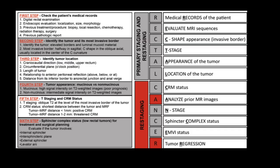Rectal carcinoma staging is a multidisciplinary approach. The checklist is: first, check the patient medical records, including digital rectal examination, endoscopic evaluation, and previous treatments or procedures. Second, identify the tumor and its most invasive border. Third, identify the tumor location — its craniocaudal direction, circumferential plane, length of the tumor, relationship to the anterior peritoneal reflection, and distance from its inferior border to the anorectal junction and anal verge.